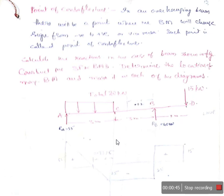Now let us consider a problem. This is an overhanging beam where supports are at A and B, and BD is the overhanging part. At D, there is a 15 kilonewton point load. In between A and C, there is a UDL but the total load is 80 kilonewton, given directly. The lengths are shown: 3 meters, 3 meters, and 2 meters.